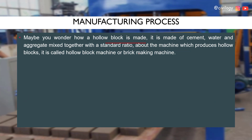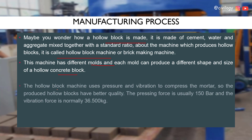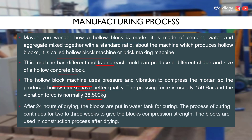Next we talk about the manufacturing process. A block is made of water, cement, and aggregate mixed together in a standard ratio. The machine that produces hollow blocks is called a hollow block machine or brick-making machine. This machine has different molds and each mold can produce a different shape and size of block. The hollow block machine uses pressure and vibration to compress the mortar, giving the produced blocks better quality.